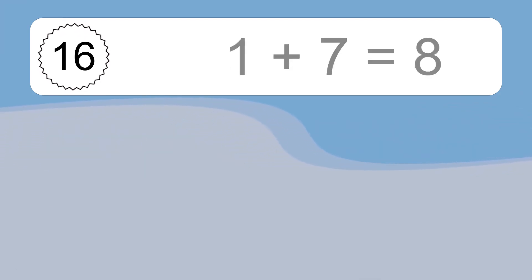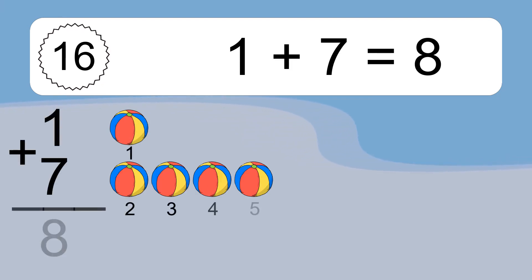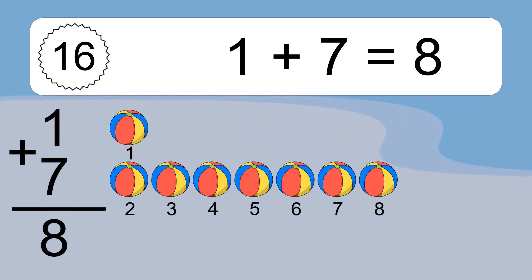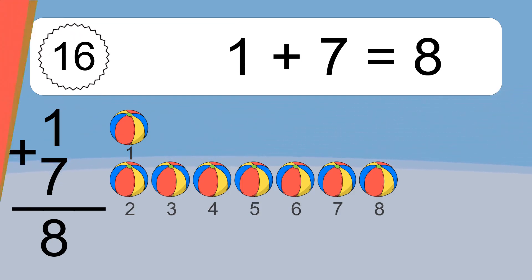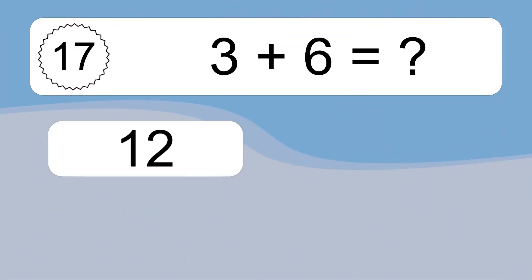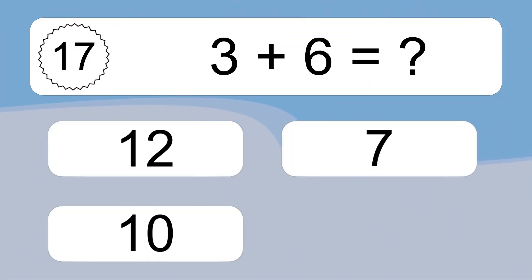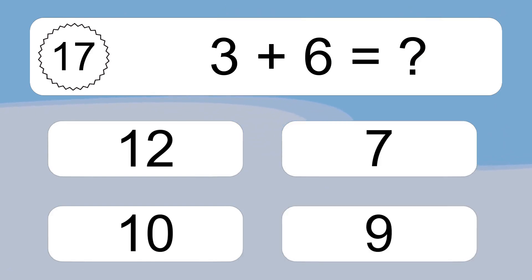1 plus 7 equals what? 1 plus 7 equals 8. Let's count it. 1, 2, 3, 4, 5, 6, 7, 8.